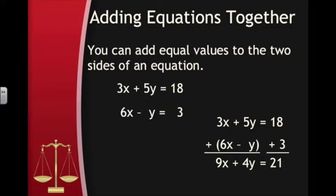We are still being fair because we are adding equal values to both sides of the equation. In this example, adding the equations like this doesn't help us solve the system, but we'll see later what we can do first to make it work.